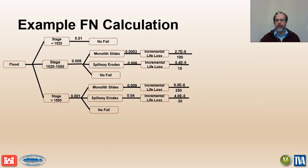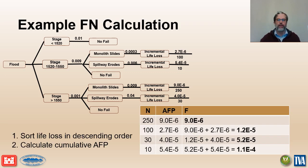Now let's use the same event tree example to go over the calculations for the big fn curve. The big fn values are estimated for the total incremental risk. Each failure n branch of the event tree corresponds to one point on the big fn curve. We sort the life loss values in descending order from largest to smallest, then calculate the cumulative sum or running total of the corresponding annual failure probability values. The resulting set of points defines the big fn curve.